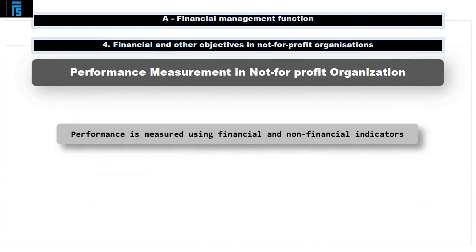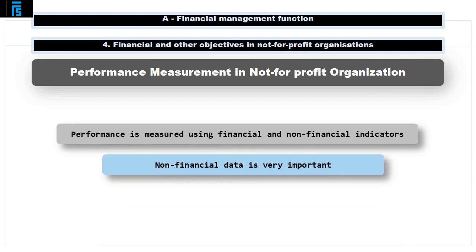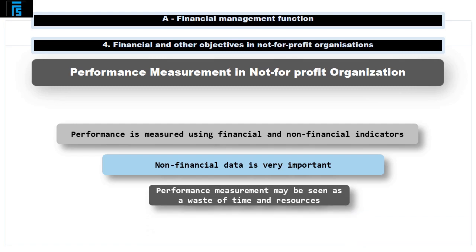Performance measurement is measured using financial and non-financial indicators. Non-financial data is very important in a not-for-profit to measure the achievement of non-quantifiable goals. In a traditional business, performance management is very important, and there is a motivation to undertake it for management bonuses and appraisal, as well as the good of the organization itself. As not-for-profits often have a lot of volunteer staff, performance measurement may not be seen as a priority.